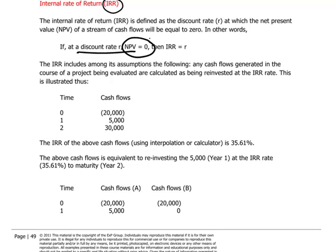Think about it like a break-even discount rate. One of the interesting things about the IRR is that among its assumptions, it says that any cash flows generated in the course of a project are deemed to be reinvested at the IRR rate. This is usually an observation which is glossed over — people don't pay too much attention to what that actually means, but it does have some practical implications.